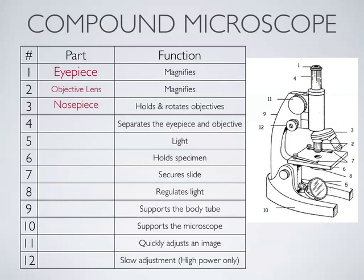Between the eyepiece and the objective is the body tube. Sometimes it's straight up and down; on our microscopes it's at an angle. The body tube keeps the eyepiece and the objective the proper distance apart so that you can focus. You find the total magnification by multiplying eyepiece power times objective power.